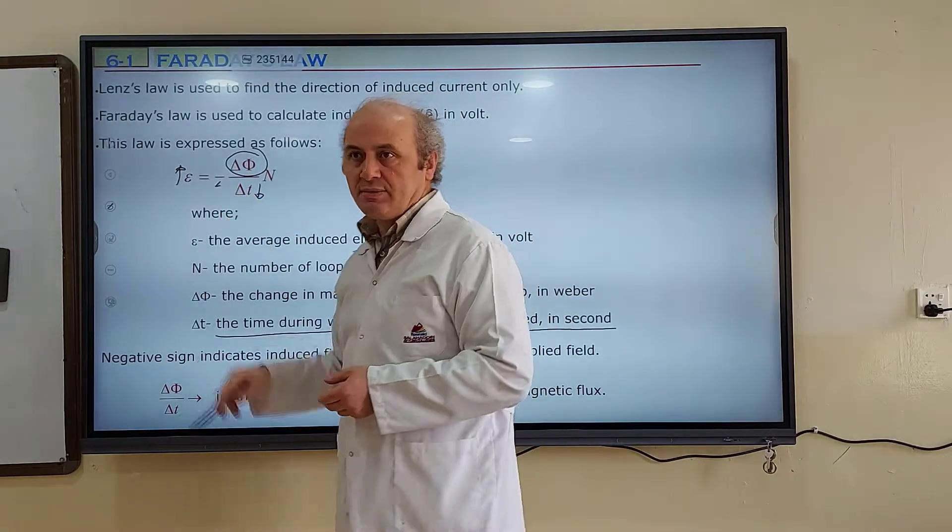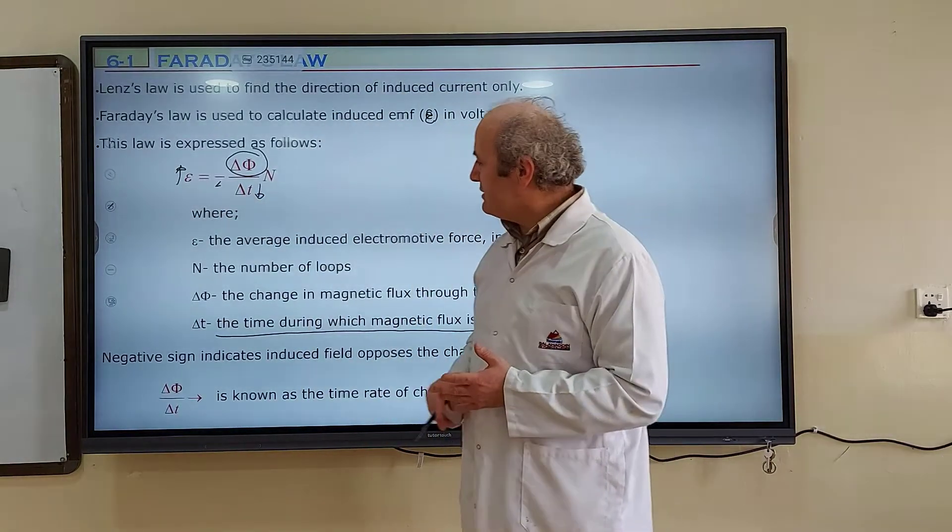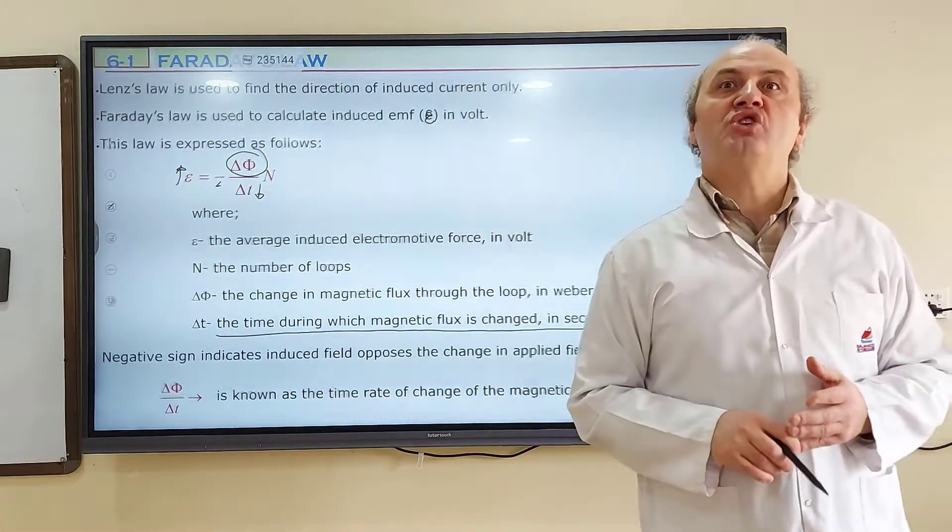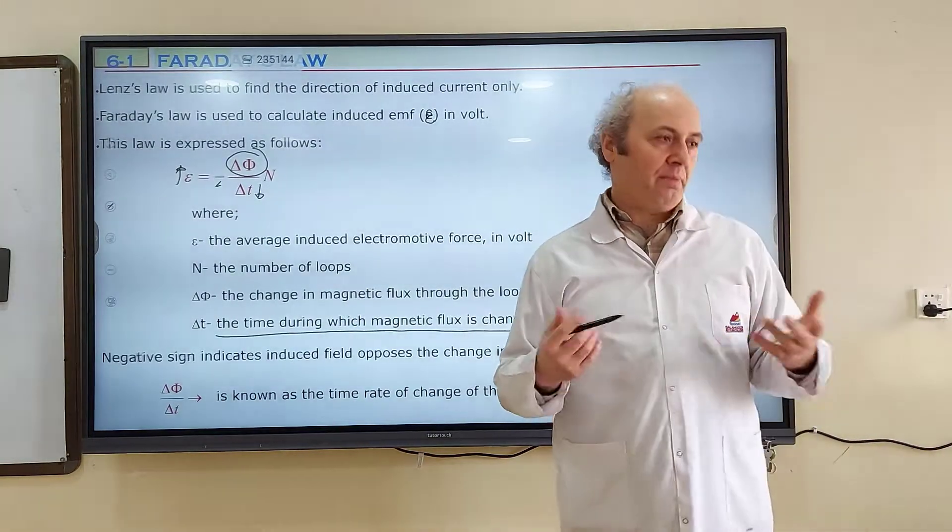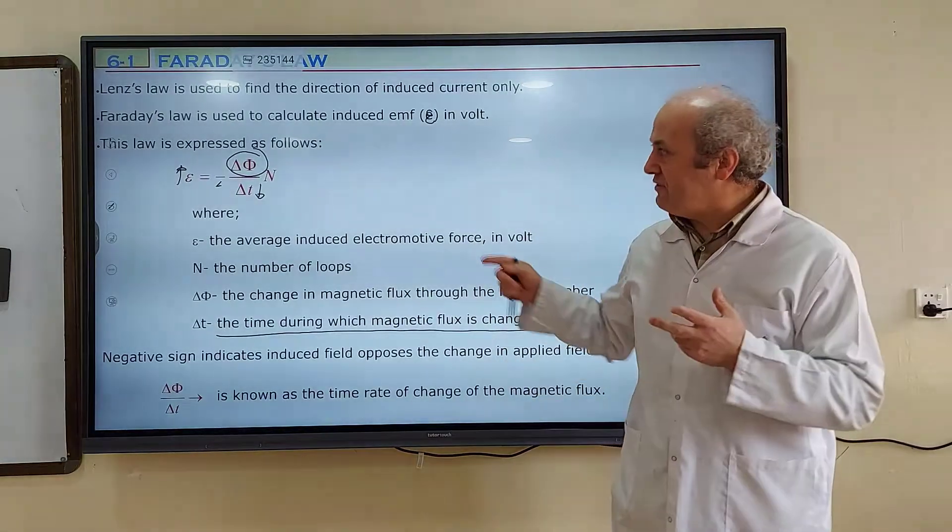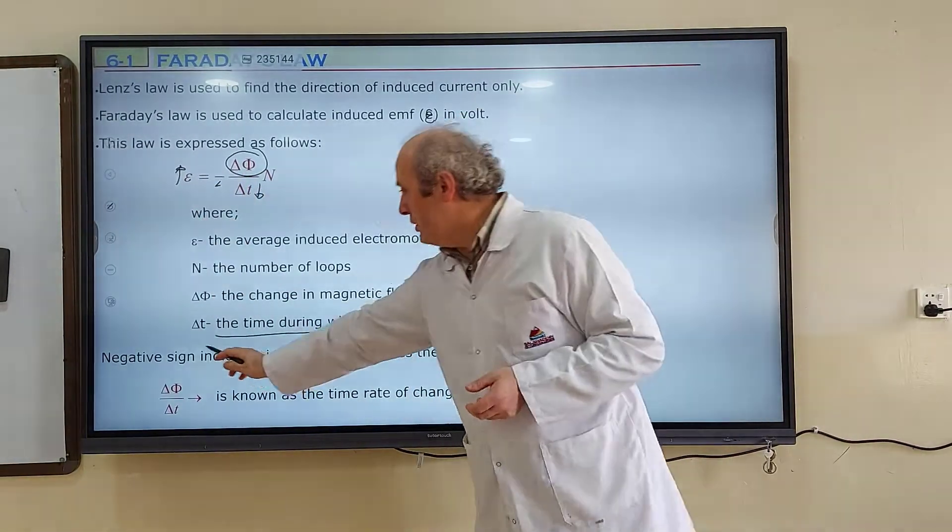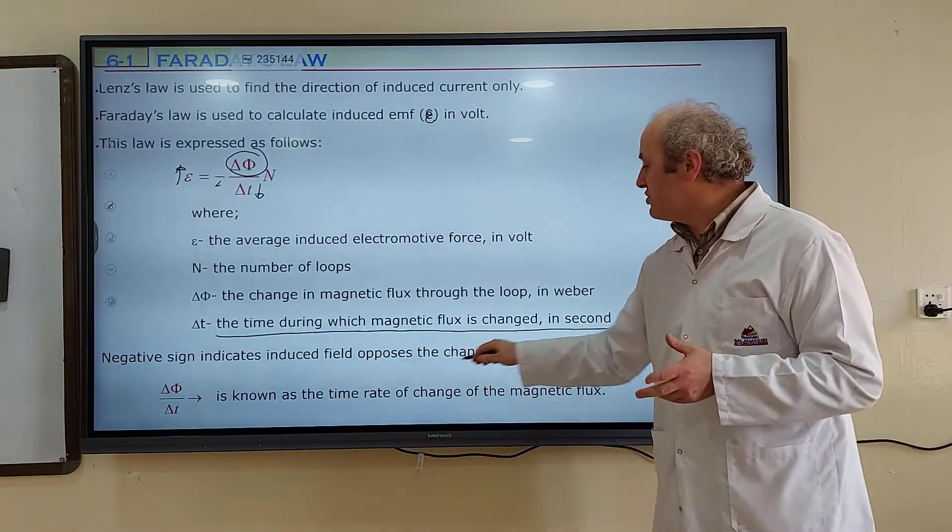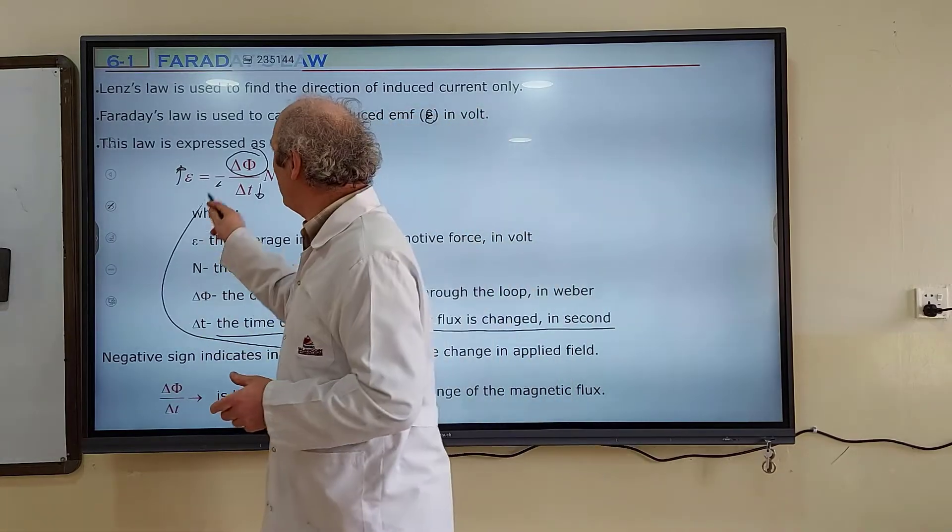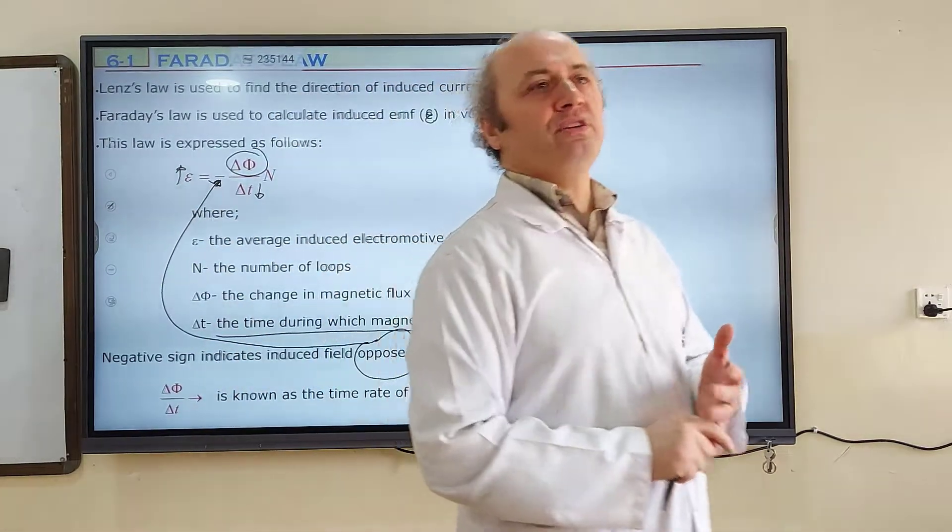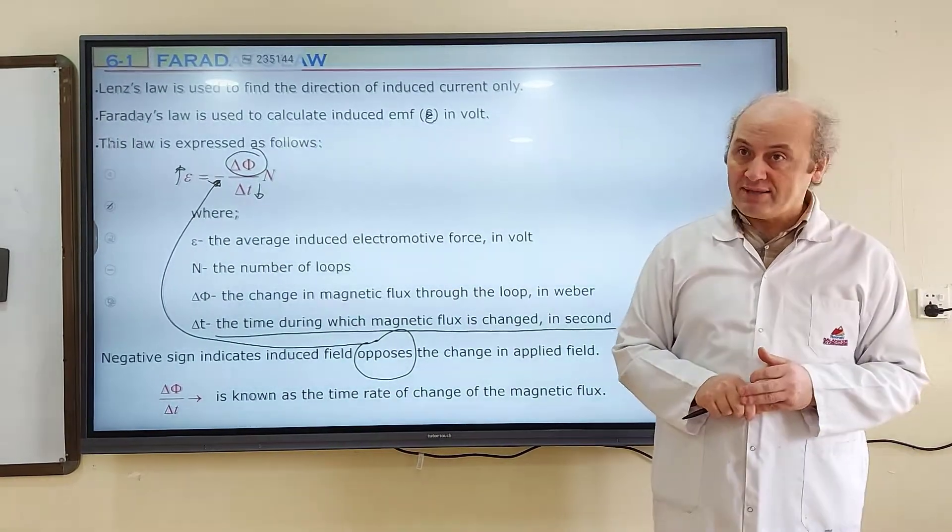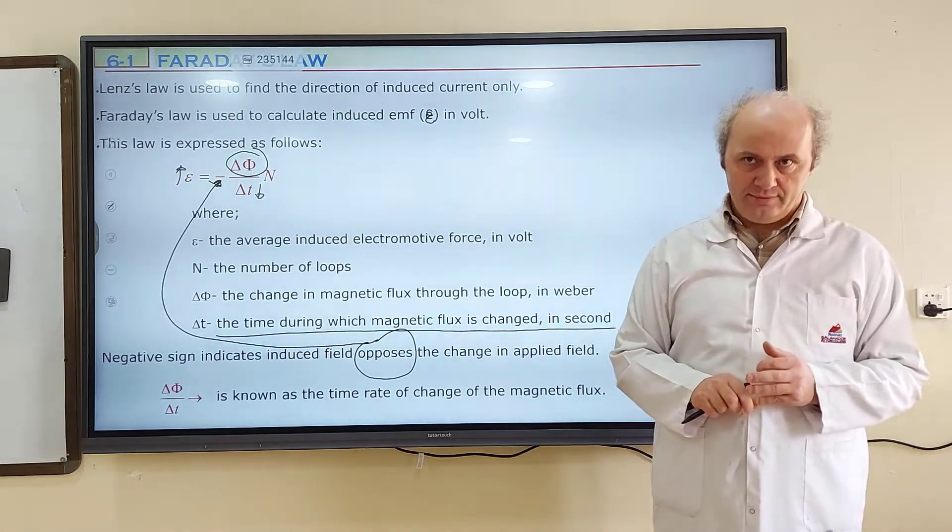Also, the equation has a negative sign. This negative sign is coming from Lenz's law. Remember, Lenz's law opposes the change in the applied field. That opposing gives this equation the negative sign. The negative sign indicates the induced field opposes the change in applied field. The equation for induced EMF is negative delta phi divided by delta t, multiplied by n.